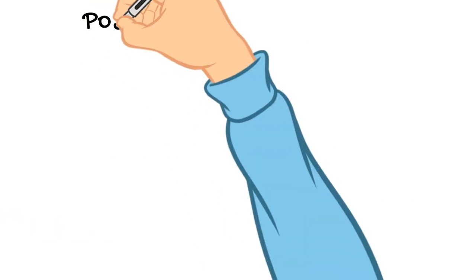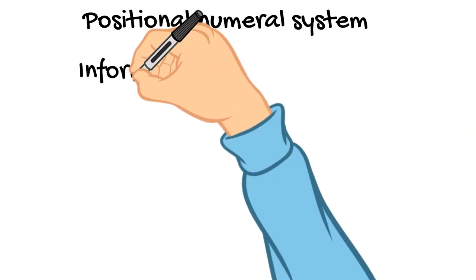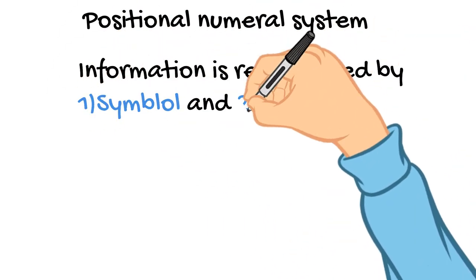These are so-called positional numeral systems, referring to the fact that information is represented by a symbol and its position.